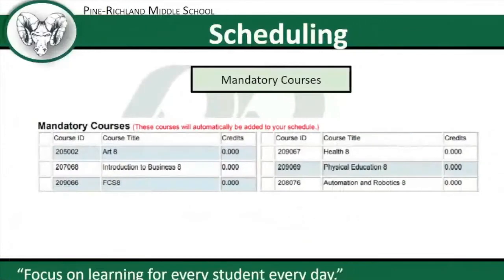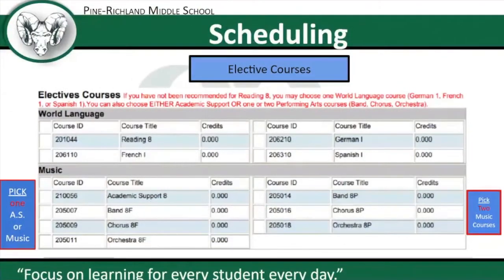This slide covers your mandatory courses for eighth grade. Just like last year you have your unified arts courses that meet once per nine weeks, and instead of foreign language opposite PE you will have health every other day. For elective courses, under world language: if you are recommended for reading there will be a check mark in the reading box, and you will not be eligible to take French 1, German 1, or Spanish. If you're not recommended for reading, you can select any of the foreign language courses you're interested in.